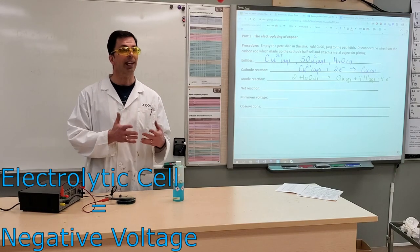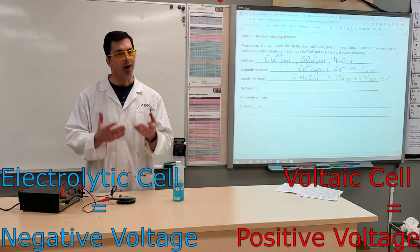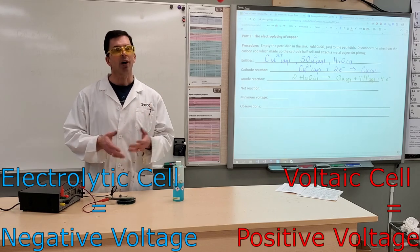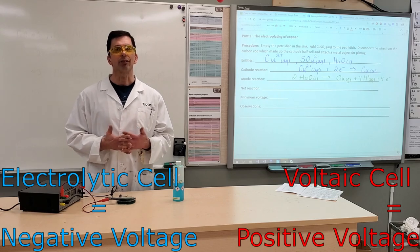and voltaic cells is that the net voltage for an electrolytic cell will always be negative. Whereas in a voltaic cell, net voltage is always positive in a spontaneous reaction. So that's a key difference.